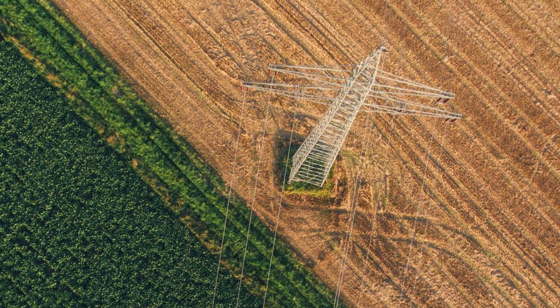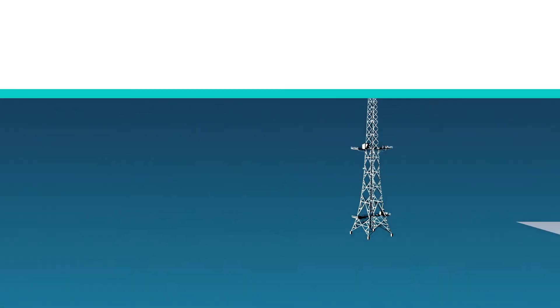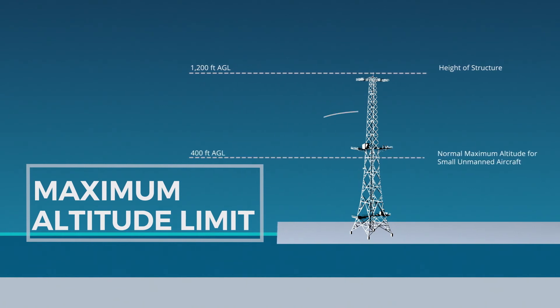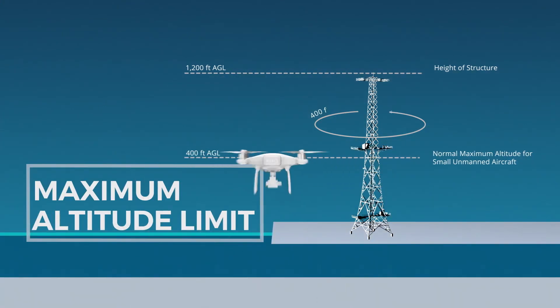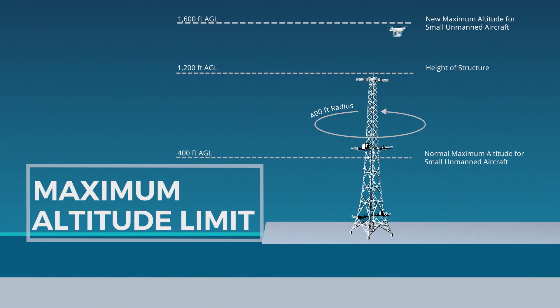The fourth operating limitation is the maximum altitude limit. Under Part 107, a remote pilot in command cannot fly an unmanned aircraft higher than 400 feet above ground level, unless it's flown within a 400-foot radius of a structure and does not fly higher than 400 feet above the structure's immediate uppermost limit. So if there's a 1,200-foot telecommunications tower, you can inspect it with your UAV as long as you're flying within 400 feet of the tower — both horizontally and above its highest point at all times. If flying above a structure means you'll be entering controlled airspace, be aware of that and follow air traffic control procedures, which are covered in other lectures.